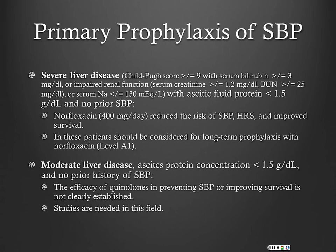For primary prophylaxis: total protein less than 1.5 warrants in-hospital prophylaxis only — they don't need to go home on it. But if a patient has severe liver disease with a high Child-Pugh score, such as Child C, they may benefit from SBP prophylaxis.